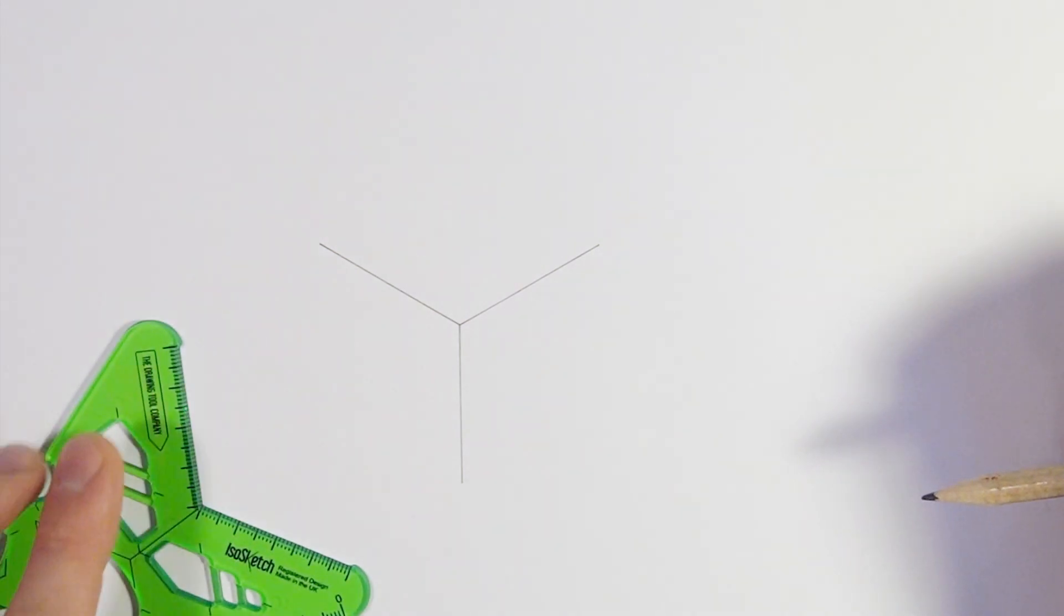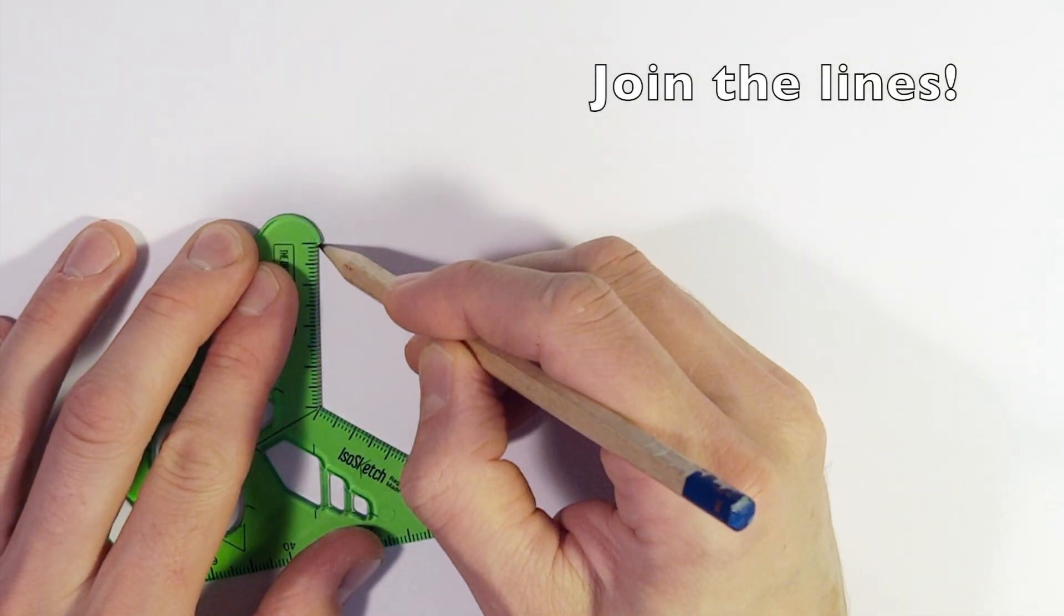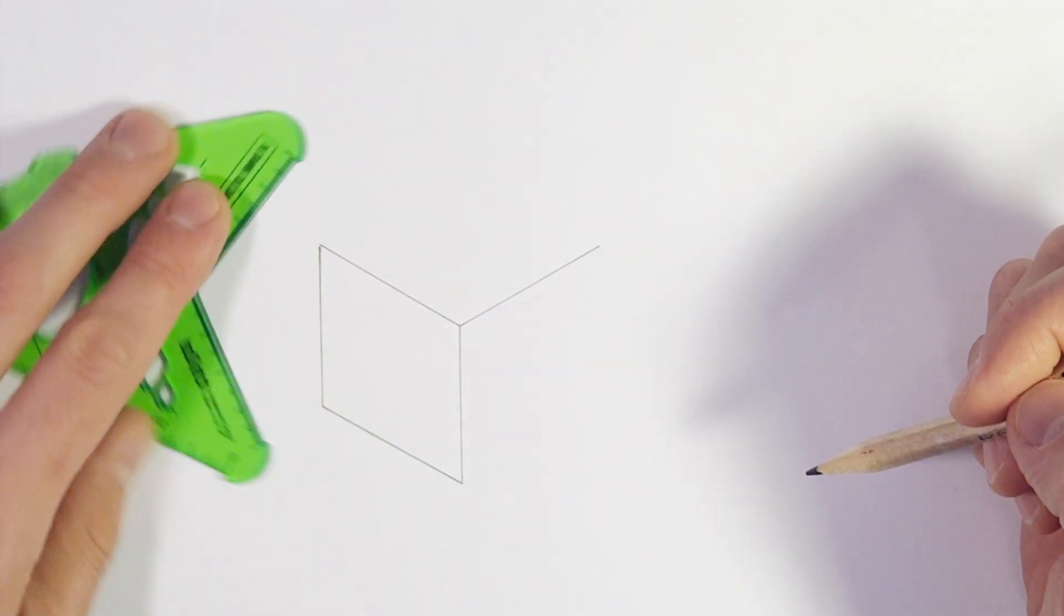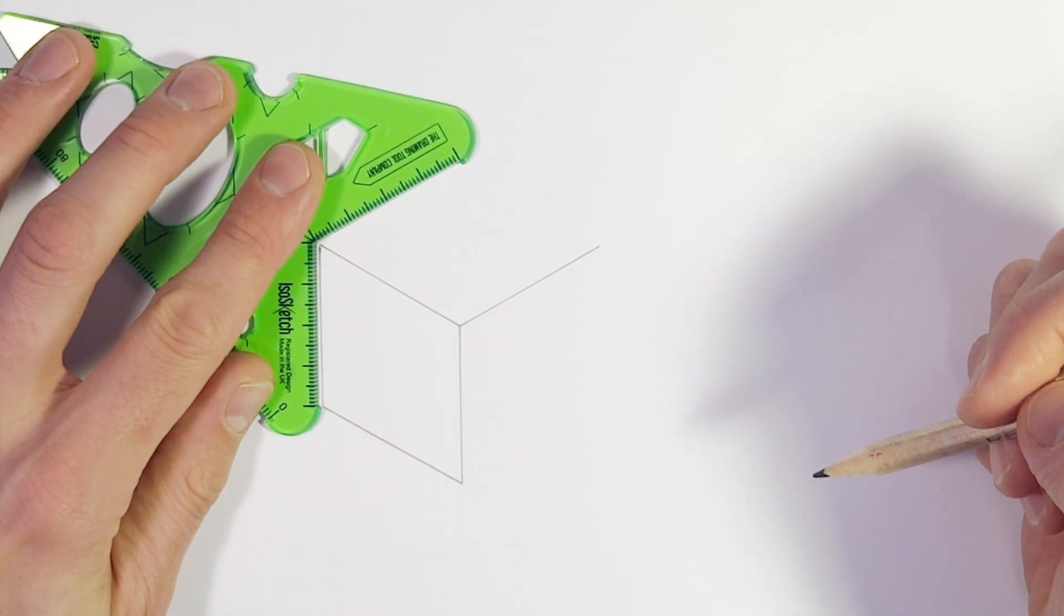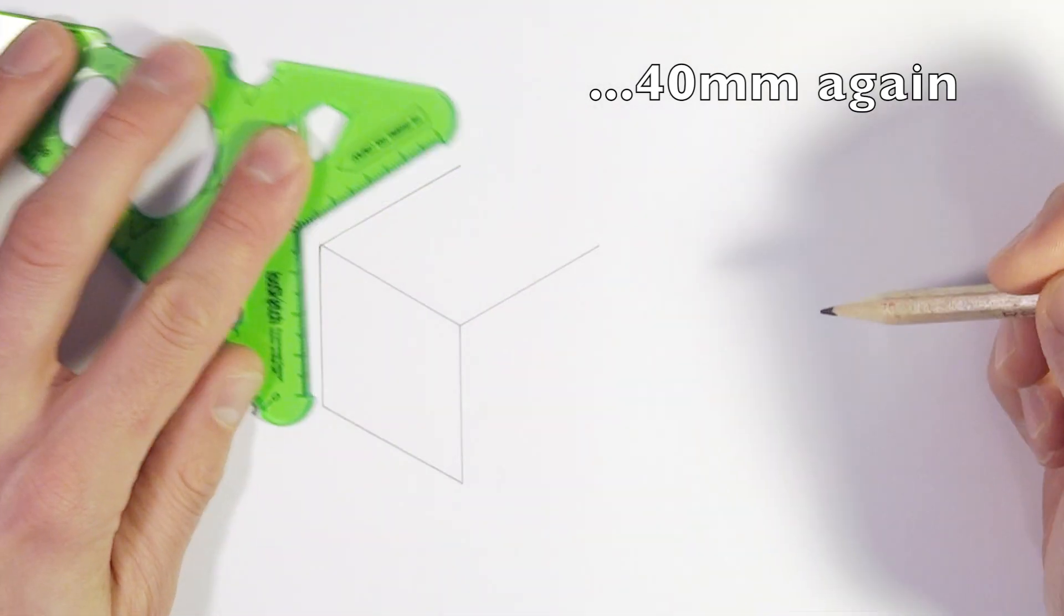This is a process called crating, where we draw crates or boxes to give us a framework to start from. In this case, a crate or box which is the size or dimensions roughly of a 4x4inSchools car.